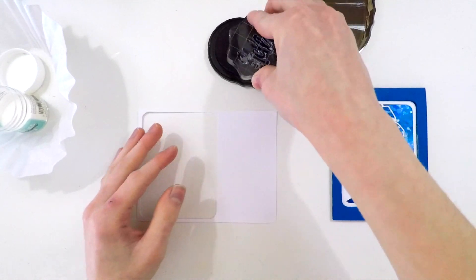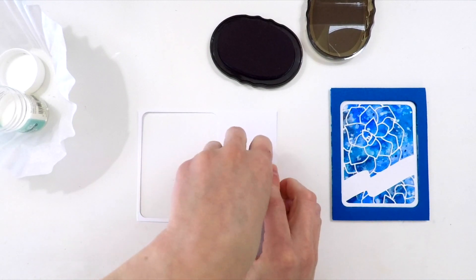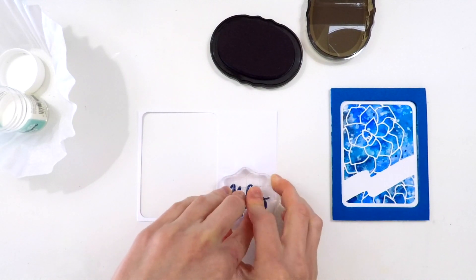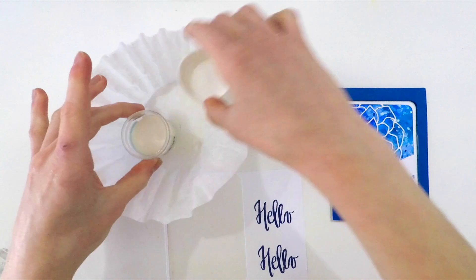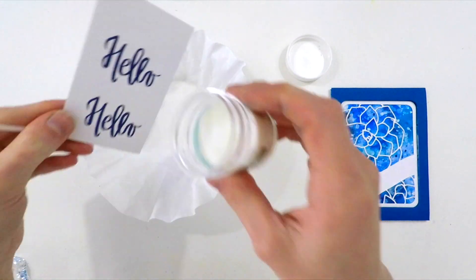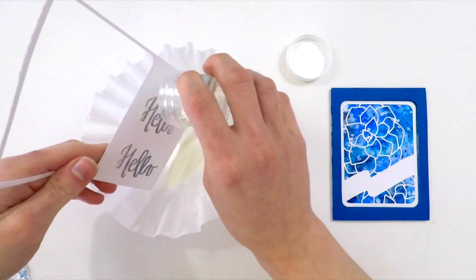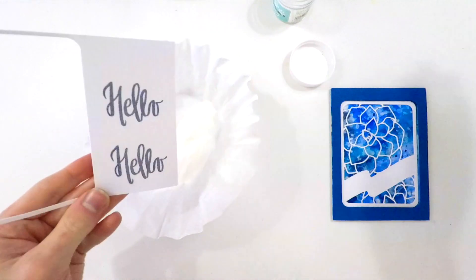For my sentiment, I'm using this Painted Hello stamp from Neat and Tangled. Because I'm making five cards, you're going to see I have two here stamped in that same blue ink, which was from Altenew.